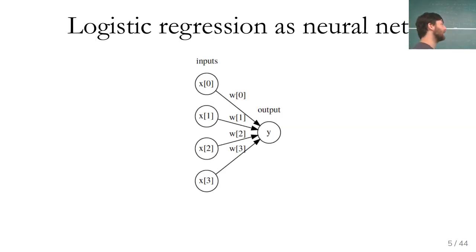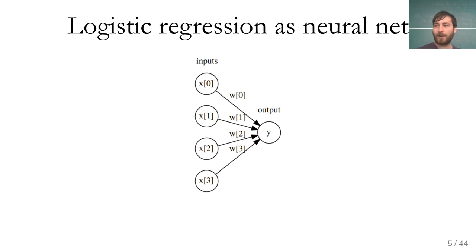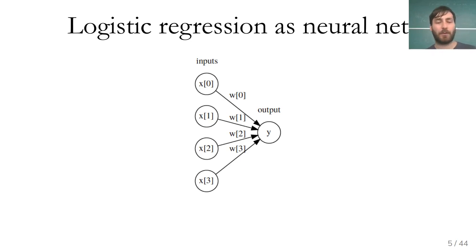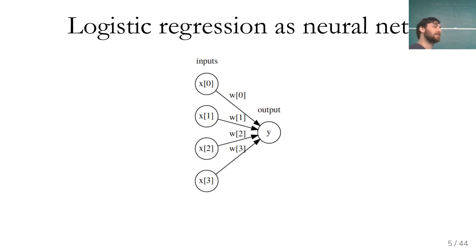Neural networks are often written down as literal networks. Here's a depiction of logistic regression as a neural network — four inputs for a four-dimensional dataset and a single output giving the probability of the class. Each input is multiplied by a weight, then all are summed at the output. The output also has a non-linearity, the logistic sigmoid. You could draw the bias as an additional fixed node, but I left it out for simplicity.